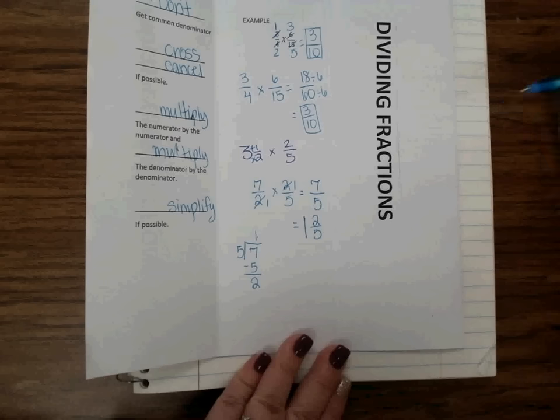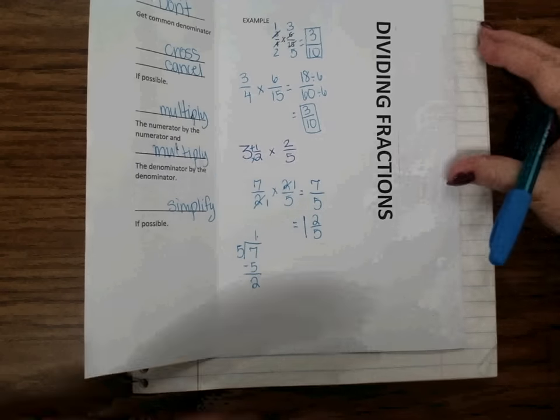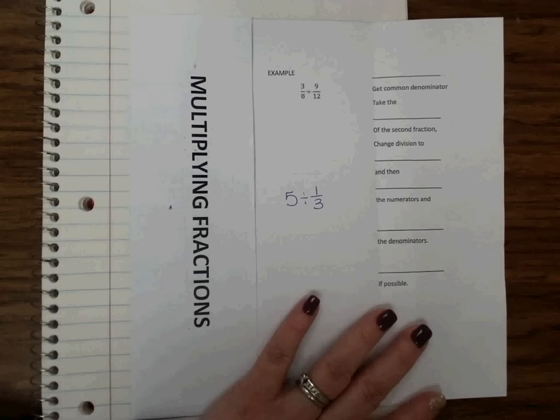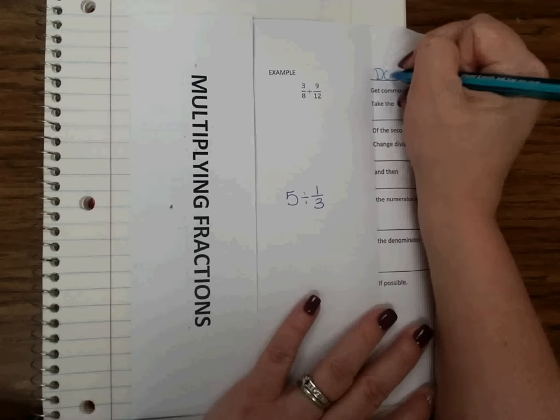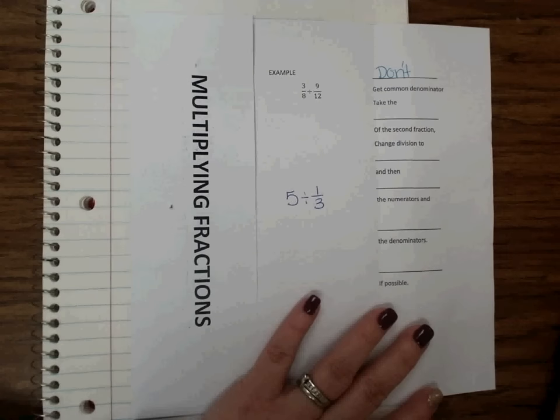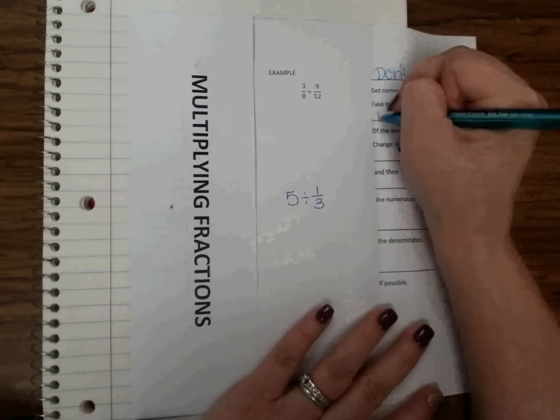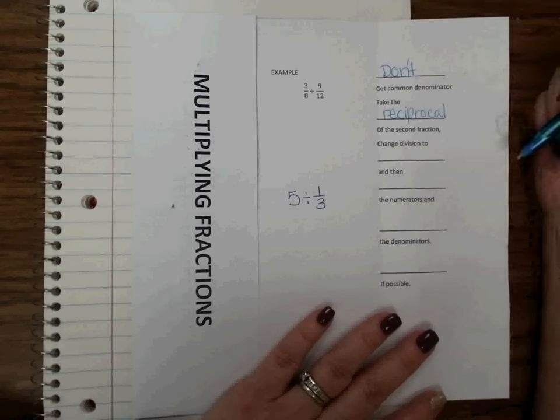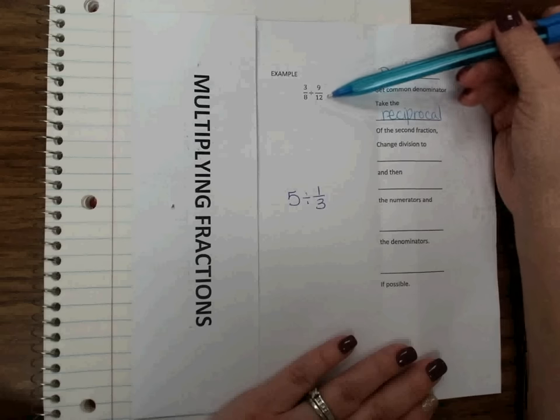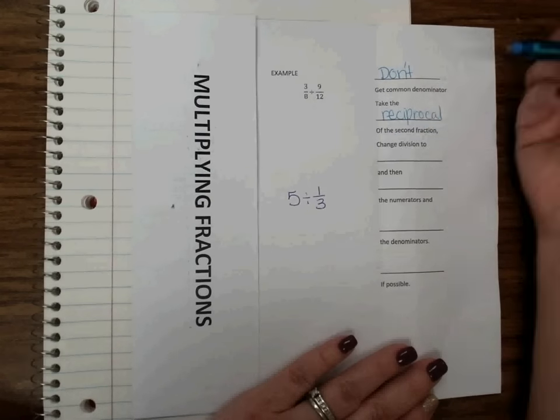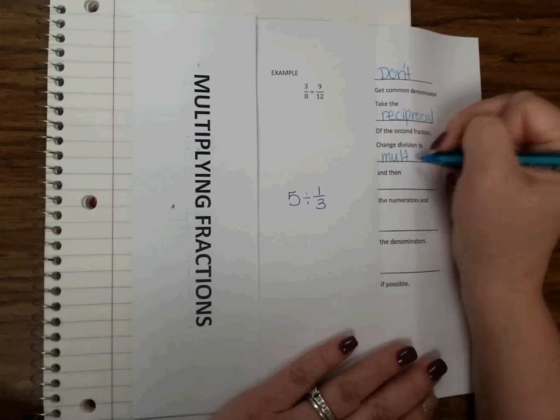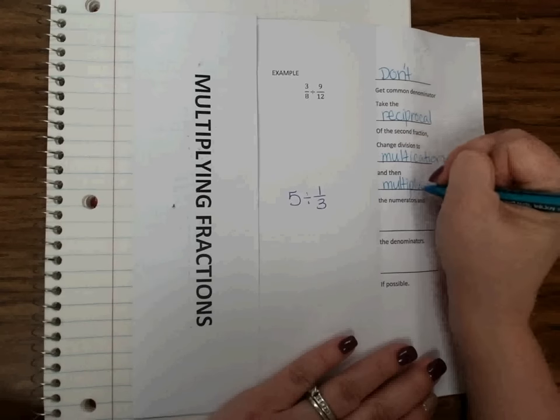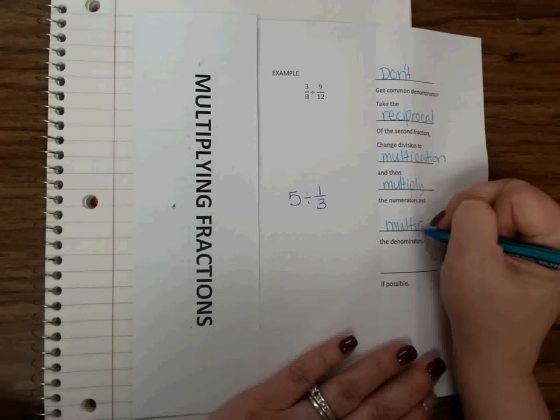It's just multiplying numerator times numerator, denominator times denominator. We do not have to have a common denominator. If I close that side, I'm going to look over at dividing. Dividing is a little bit different, but we can still do this very easily. Also, we do not need a common denominator. So we're going to say don't get a common denominator. What we do with dividing fractions is we take the reciprocal of the second fraction. We're going to change division into multiplication. So we're going to make every division problem a multiplication problem. And then we multiply our numerators. We multiply our denominators. And the last step we always do is to simplify.